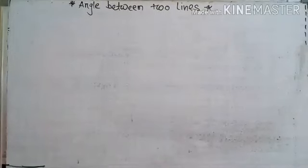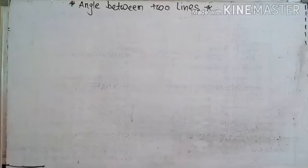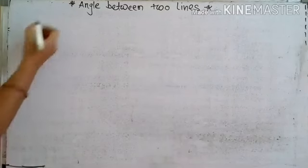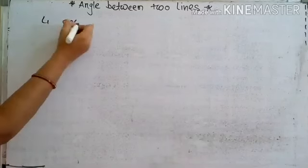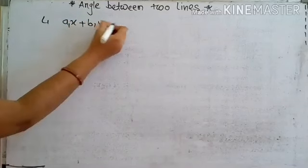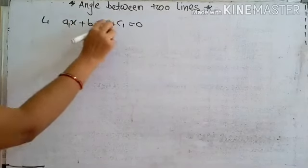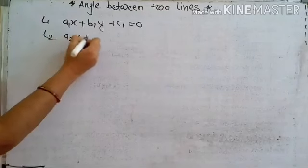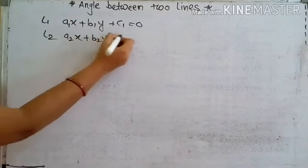Today we see the angle between two lines. When two lines are given, we have to find the acute angle between them. An acute angle is less than 90 degrees. Suppose the first line is A1X plus B1Y plus C1 equal to 0, and the second line is A2X plus B2Y plus C2 equal to 0.